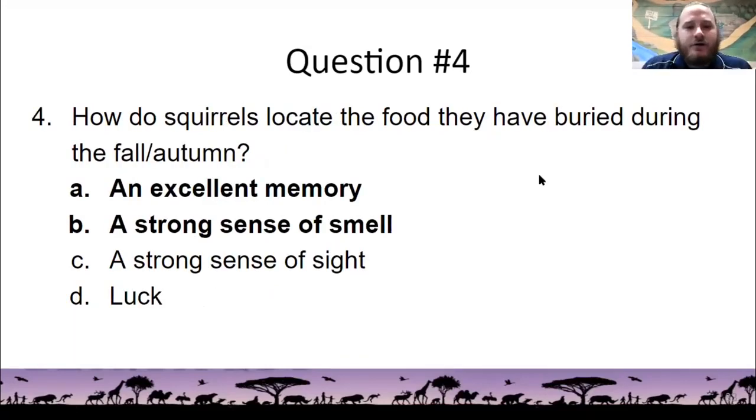All right, question number four. Squirrels locate the food they have buried during the fall and autumn through both an excellent memory and a strong sense of smell. So you get credit for either of those. And that's two points again. Now, their memory allows them to remember where they store food in clusters. And so they might know, OK, in this area, one piece of food is over here. Another piece of food is over there. They also have a strong sense of smell and combine those two things to find food.